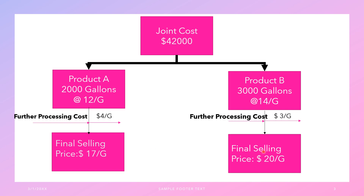Please pay attention to this. Under the physical quantity method, we are simply looking at the physical quantity of goods or products produced at the split-off point. Product A is 2,000 gallons and product B is 3,000 gallons. We are going to allocate the joint cost of $42,000 among them in the ratio of their quantities. Let's see with an example how to do it.